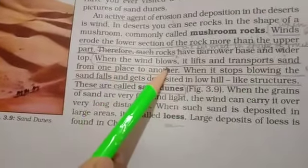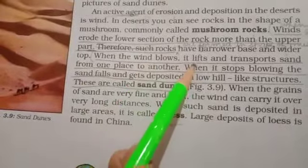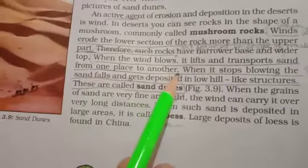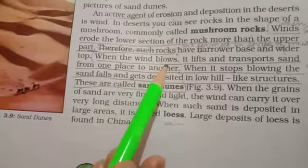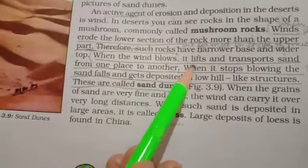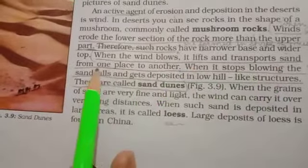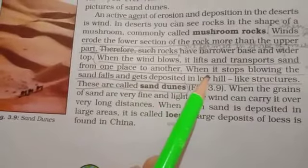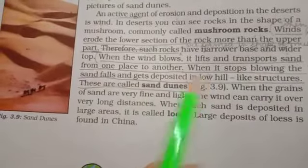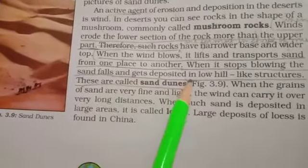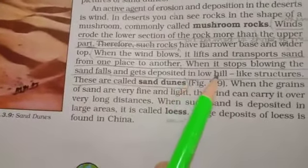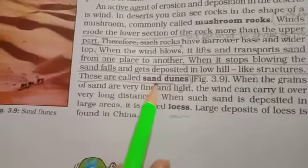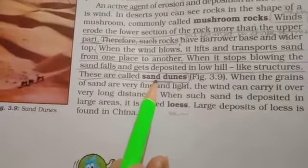When the wind blows, it lifts and transports sand from one place to another. When it stops blowing, the sand falls and gets deposited in low hill-like structures. These are called sand dunes.